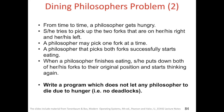From time to time, a philosopher gets hungry. She tries to pick up the two forks that are on her right and her left. A philosopher may pick one fork at a time. A philosopher that picks both forks successfully starts eating. When a philosopher finishes eating, she puts down both of her forks to their original position and starts thinking again. Write a program which does not let any philosopher die due to hunger — that is, no deadlocks.